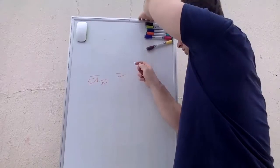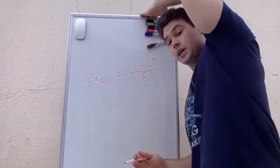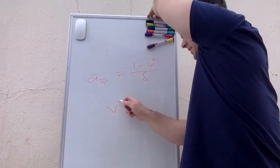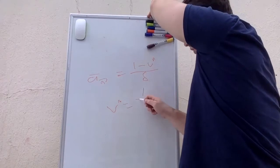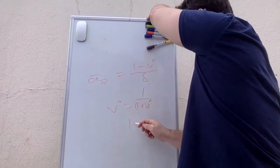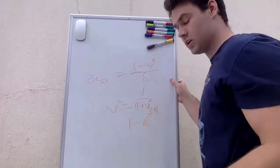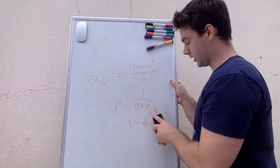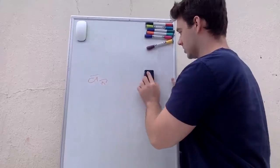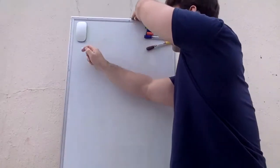The continuous annuity a-bar-angle-n equals (1 − e^(−nδ)) / δ, where δ is the continuous force of interest. Recall that v^n equals 1 / (1 + i)^n, or equivalently e^(−nδ). You can go between δ and i as needed — just make sure everything is in the right units.